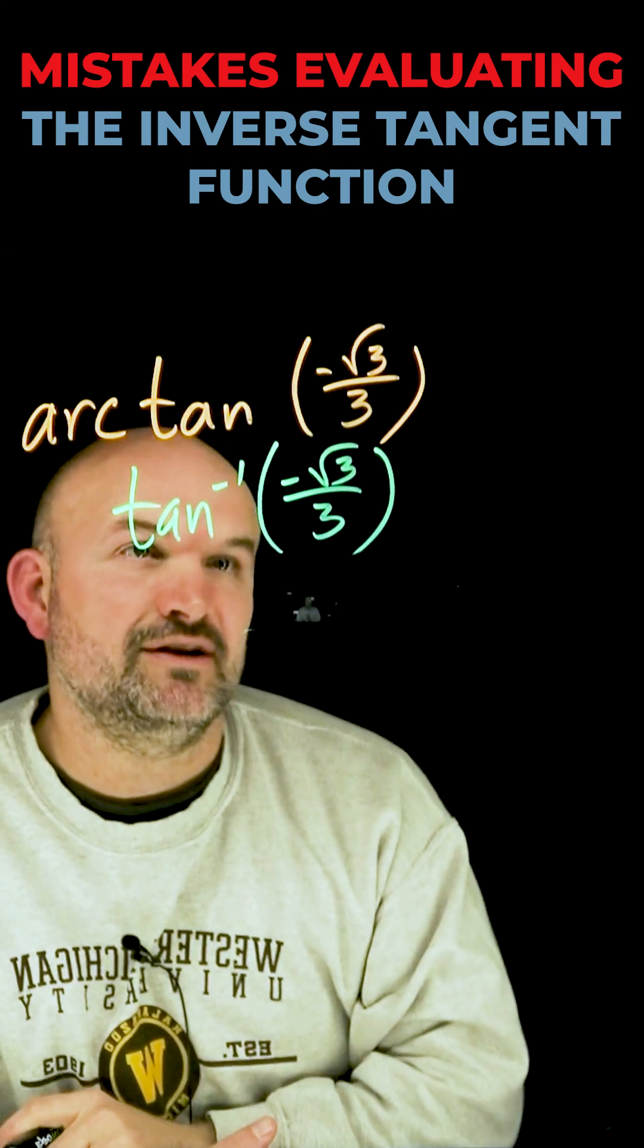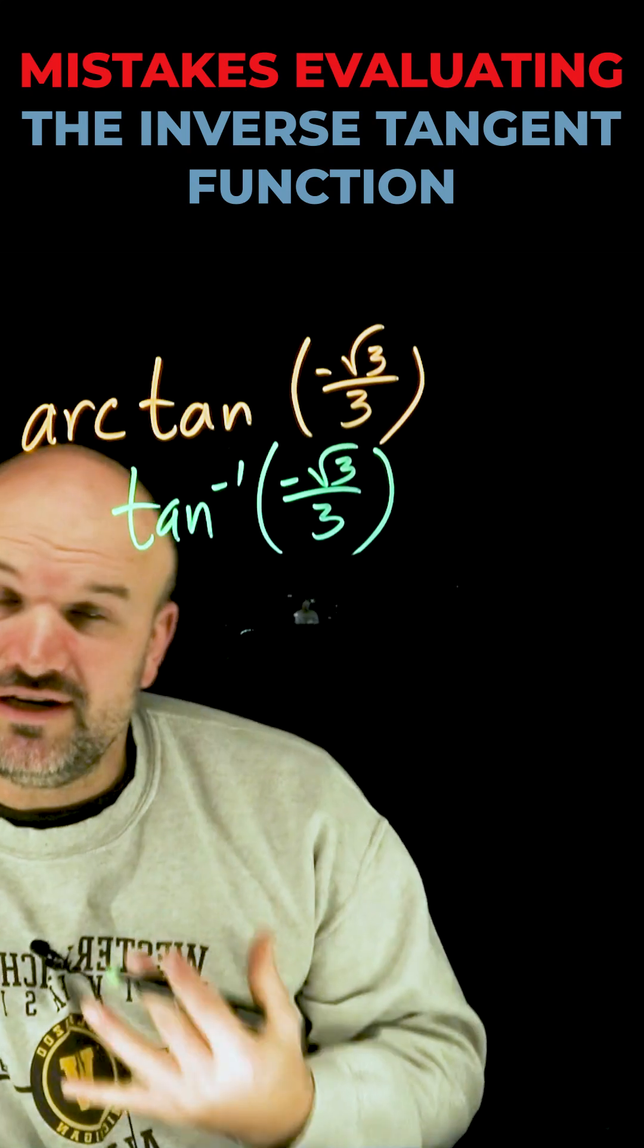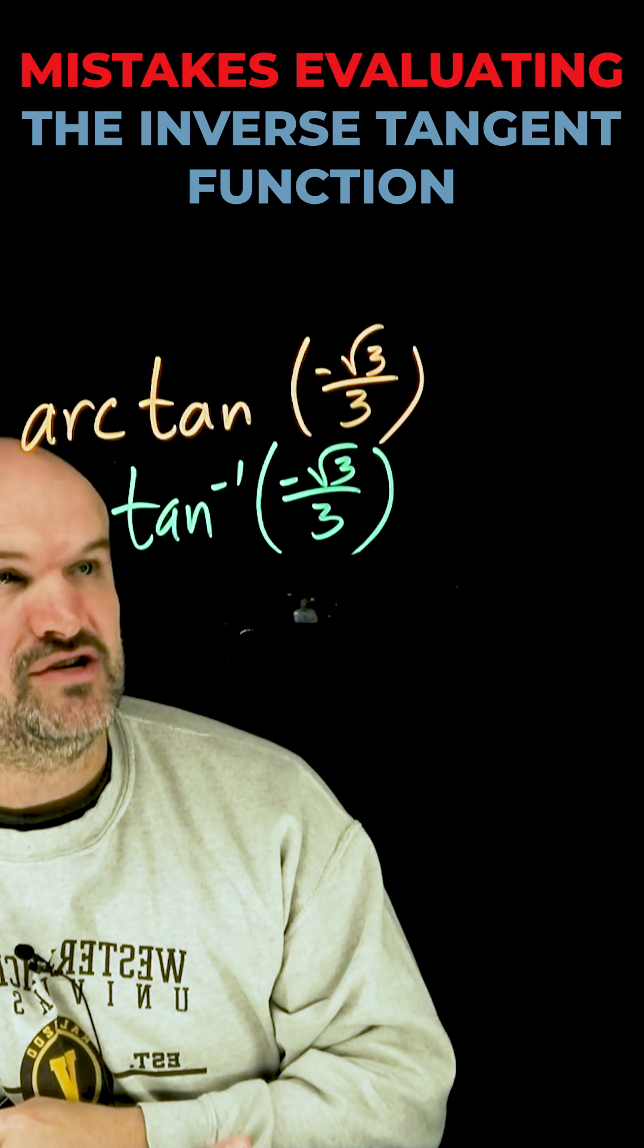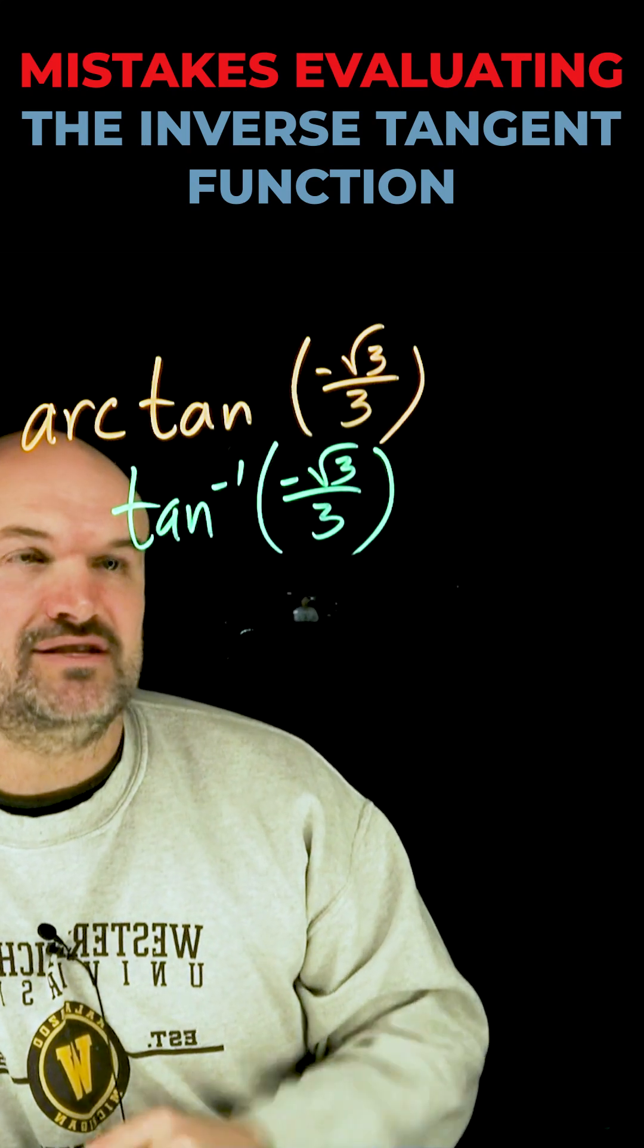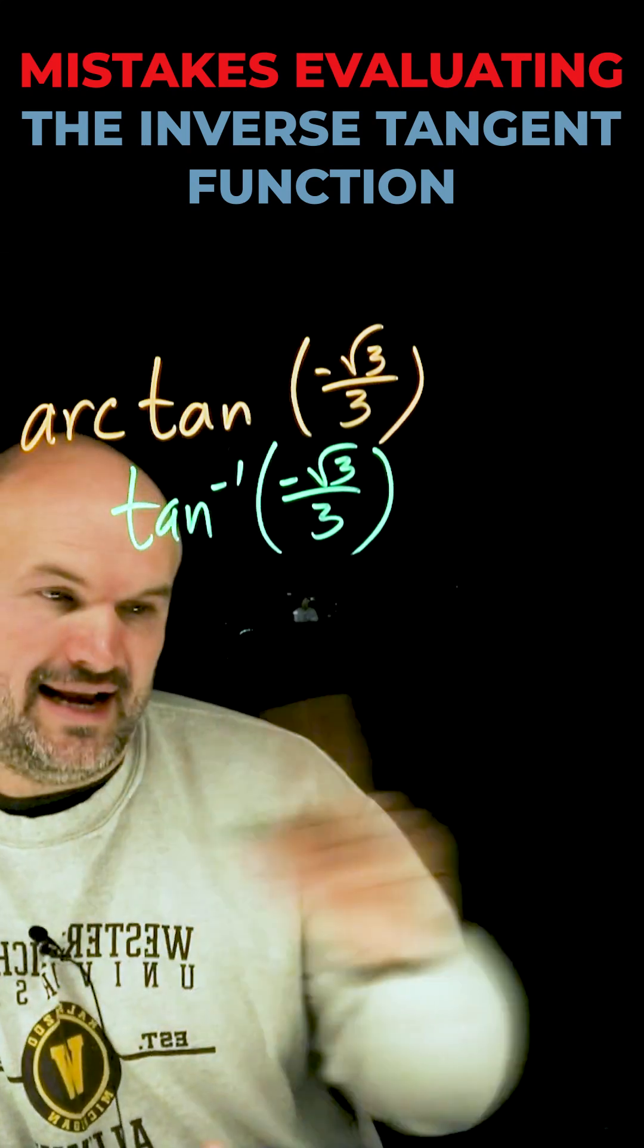So we have the tangent inverse of negative square root of 3 over 3. And what we're looking for when we're dealing with the inverse trigonometric function is the angle, the angle on the unit circle, but not any angle on the unit circle, because we can only have one angle, right? We can't have multiple.